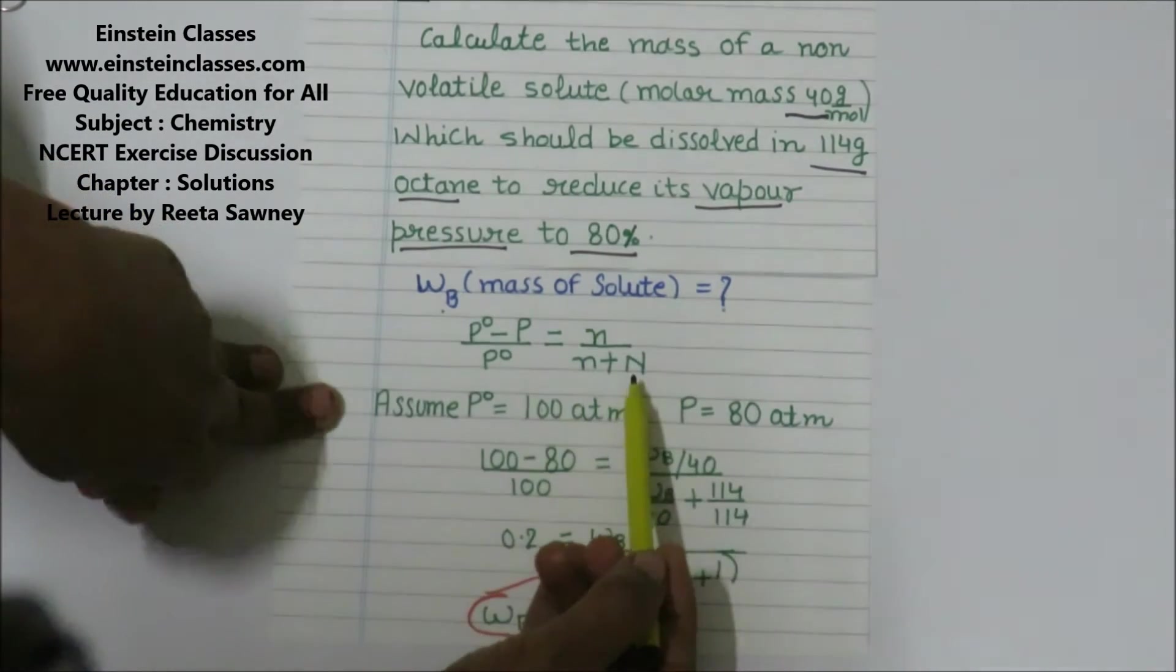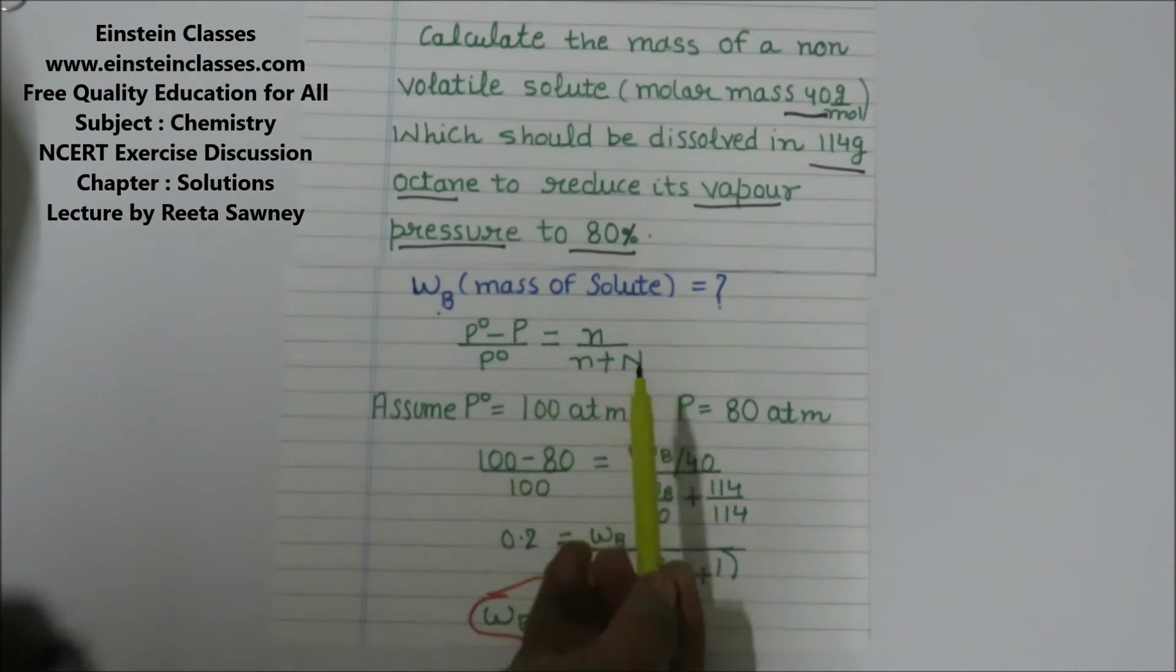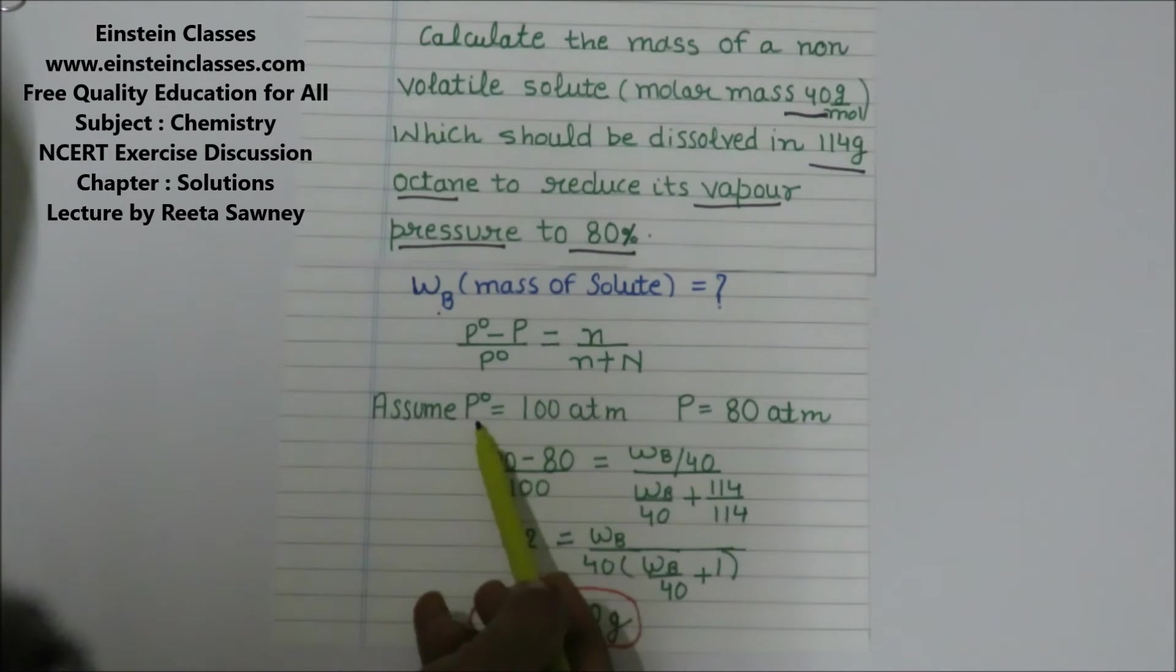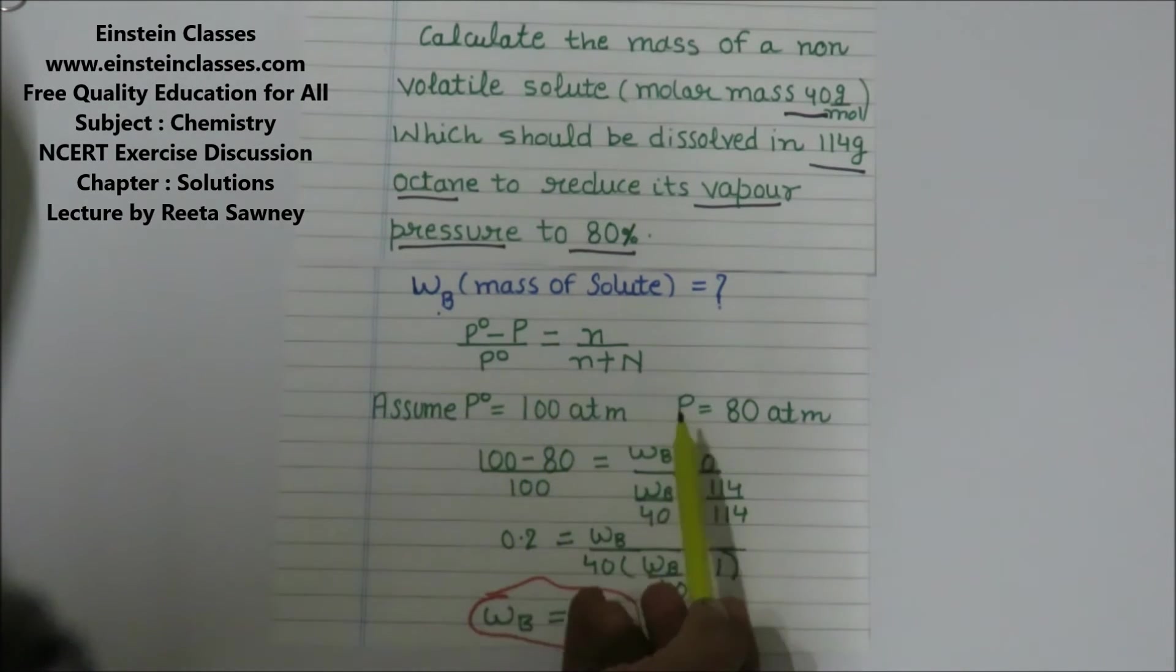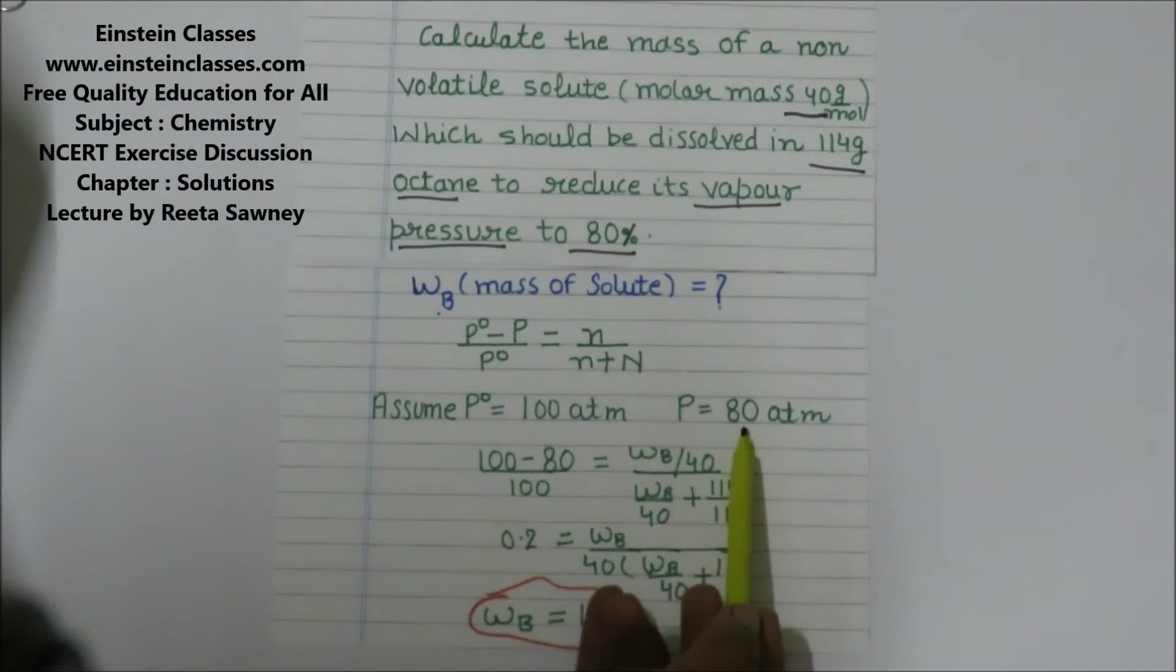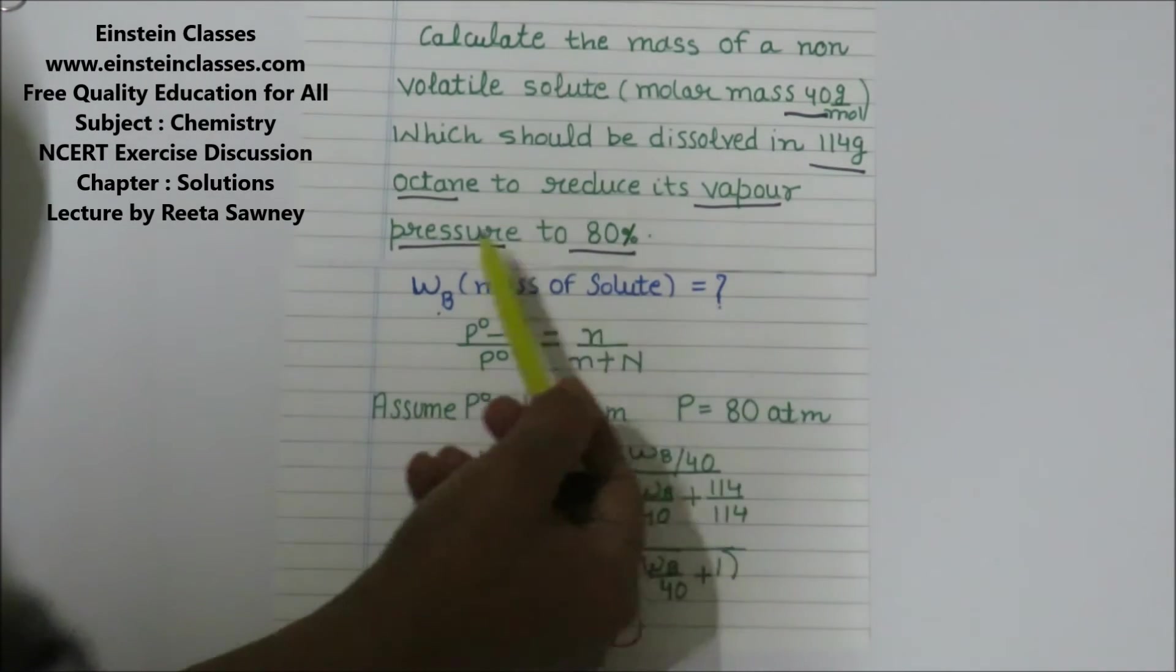Here n is the mole of the solute and capital N represents the mole of the solvent. Assuming the vapor pressure of pure solvent to be 100 atm, and the vapor pressure of solution is reduced to 80 atm.